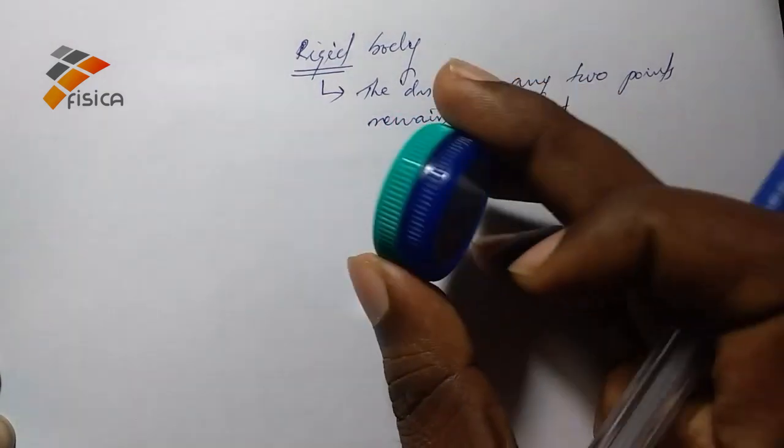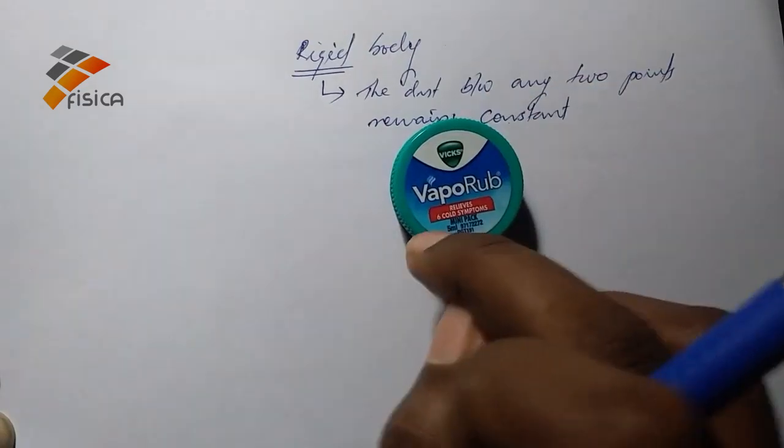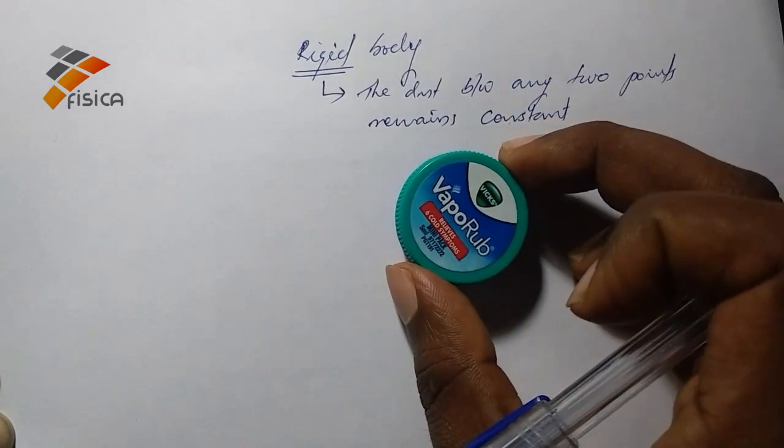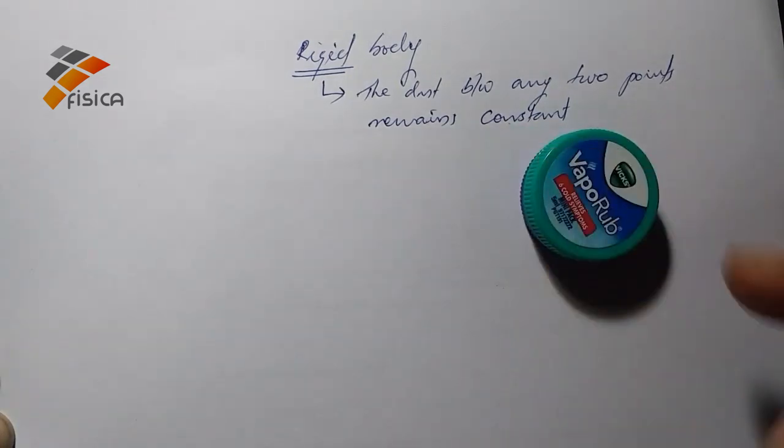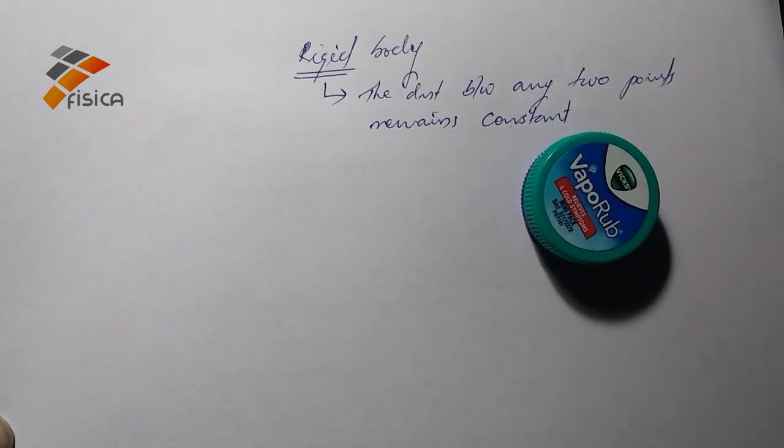So this is an example of a rigid body. The distance between any two points, suppose this point and this point, is always constant. If I am rotating or translating this one, the distance between any two points is constant. So this is an example of a rigid body.